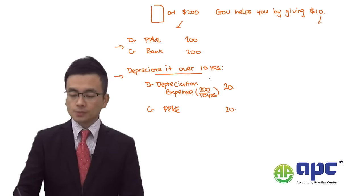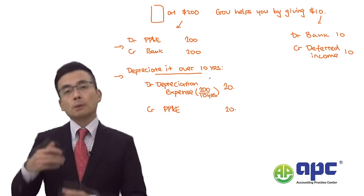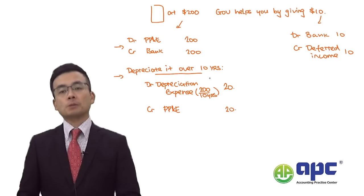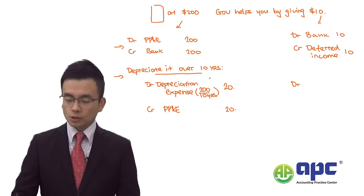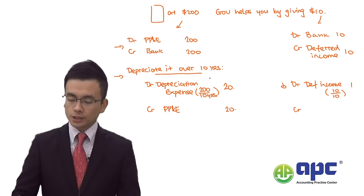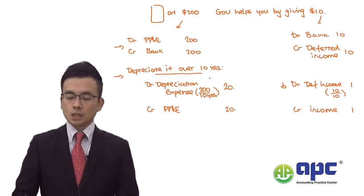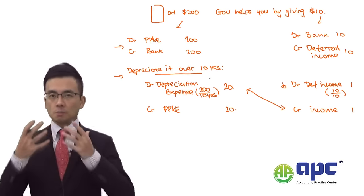When receiving the $10 grant, you debit bank $10 and credit deferred income liability $10. Subsequently, you release that deferred income liability over 10 years — $1 per year — by debiting the deferred income liability $1 and crediting income in the P&L $1, matching the expense incurred when acquiring the asset according to the matching principle.